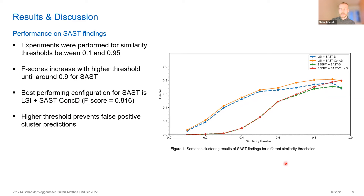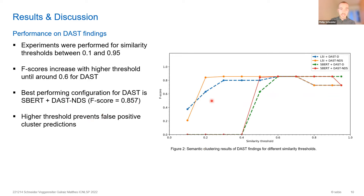Looking at the same results for the DAST findings: LSI performs a bit better for low similarity thresholds, but starting at around a similarity threshold of 0.6, the best performing model was SBERT — specifically SBERT with the corpus variant where we concatenated not only the description but also the name and the solution. With this configuration we achieved an F-score of 0.857.